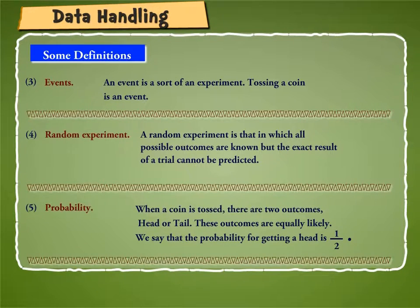5. Probability: When a coin is tossed, there are two outcomes, head or tail. These outcomes are equally likely. We say that the probability for getting a head is 1 by 2.